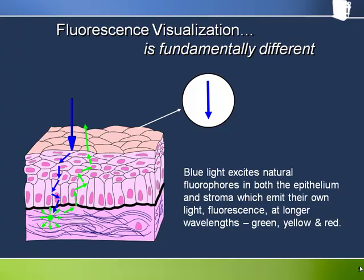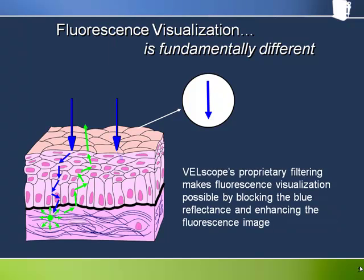These fluorophores absorb the blue excitation light and then re-emit light at a longer wavelength — that is, green, yellow, or red — a fraction of a second later. Blue light excites fluorophores in both the epithelium and the stroma. The natural fluorescence from the tissue is relatively weak, much less bright than the blue reflected light. The Velscope handpiece allows us to see the natural fluorescence by blocking the much brighter blue light reflected back from the tissue. Proprietary filtering of the fluorescence light is also performed to optimise the contrast between normal and abnormal tissue.